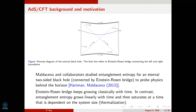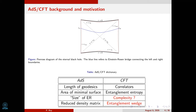The motivation for introducing complexity in the ADS-CFT literature is as follows. Maldacena and collaborators studied entanglement entropy for an eternal two-sided black hole to probe physics behind the horizon. Back in 2013, they found that the Einstein-Rosen bridge connecting the two boundaries keeps growing classically with time. In contrast, the entanglement entropy grows linearly with time and then saturates at a time dependent on the system size — this is called thermalization — a result well known from conformal field theory and entanglement entropy calculations in harmonic chains.